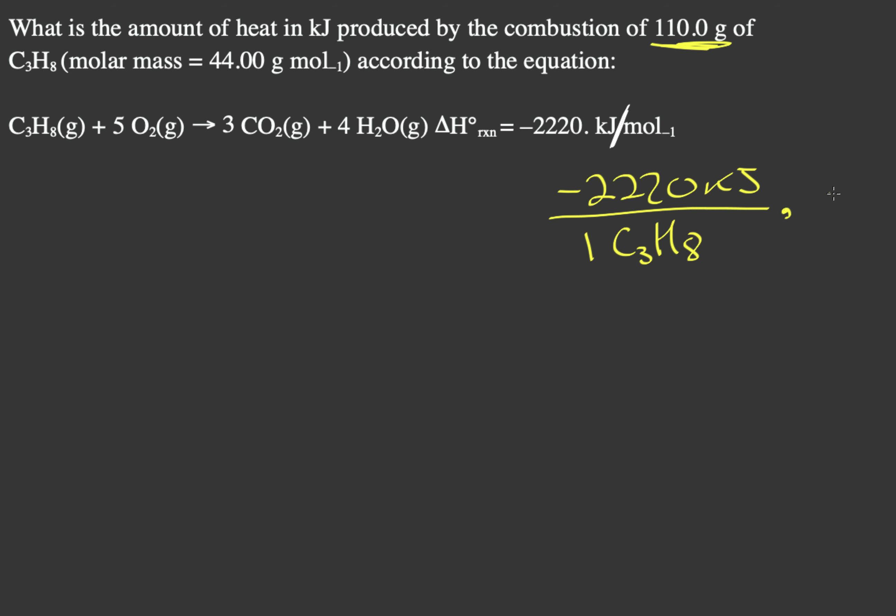We have to multiply this by the moles of C3H8 in order to cancel out these units. So let's figure out how many moles of C3H8 we have. We have 110.0 grams, and if we divide it by our molar mass, which is 44, we get 2.5 moles.